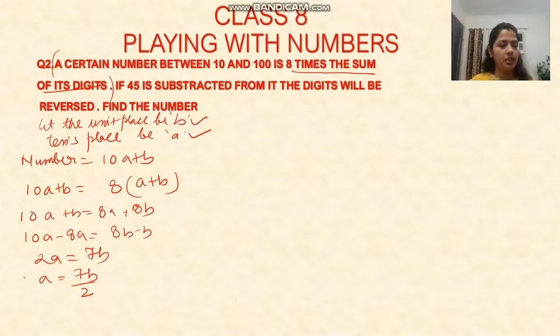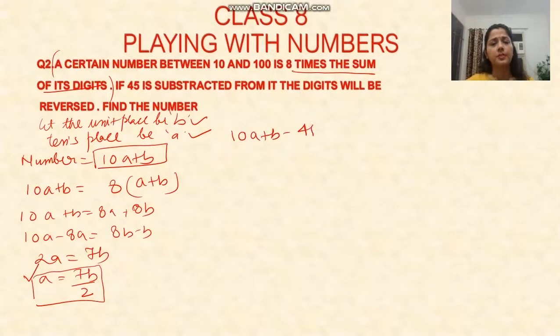Now, if 45 is subtracted from it, the digits will be reversed. So 10a plus b minus 45 equals the reversed number, which is 10b plus a. The digits are reversed now.